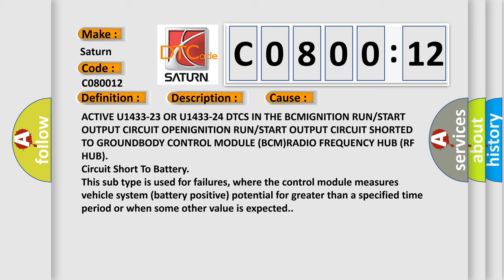This subtype is used for failures where the control module measures vehicle system battery positive potential for greater than a specified time period or when some other value is expected.